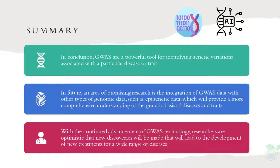Summary. In conclusion, GWAS are a powerful tool for identifying genetic variations associated with a particular disease or trait. They have the potential to improve our understanding of the underlying causes of diseases and traits, and to lead to the development of new treatments. However, it is important to note that GWAS have limitations and the results should be interpreted with caution and should be followed by further functional studies. In future, an area of promising research is the integration of GWAS data with other types of genomic data, such as epigenetic data, which will provide a more comprehensive understanding of the genetic basis of diseases and traits.